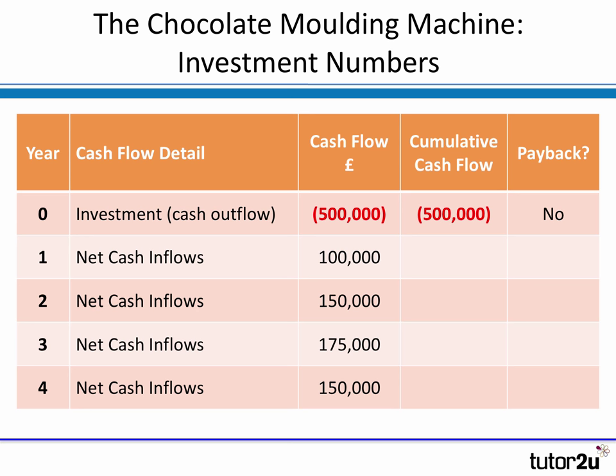Here in the table we have some numbers. Let's see how we can calculate at what stage payback is achieved. As we've mentioned, the initial investment is always an outflow. In this case, at year zero — in other words, now — the cash outflow is half a million pounds. Therefore, the cumulative total at year zero is negative half a million pounds.